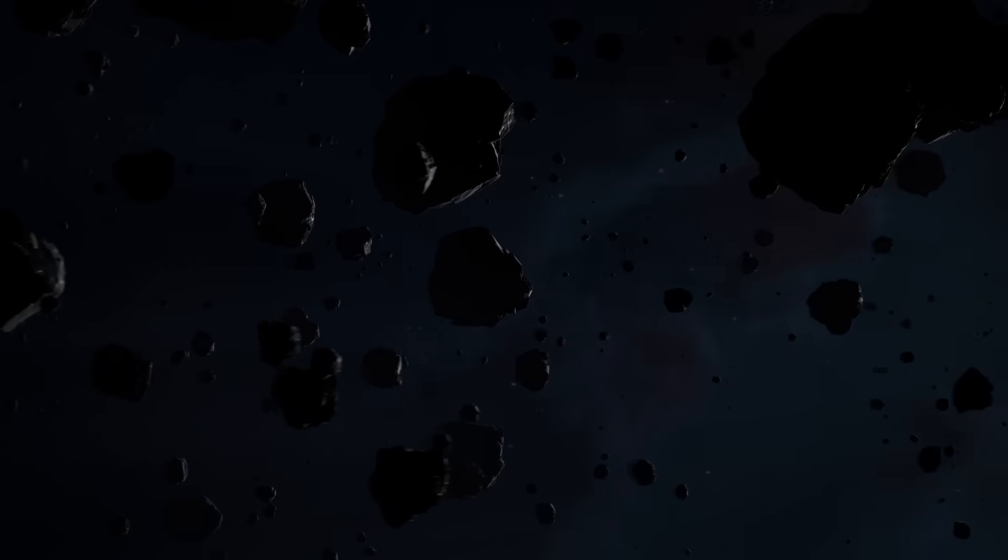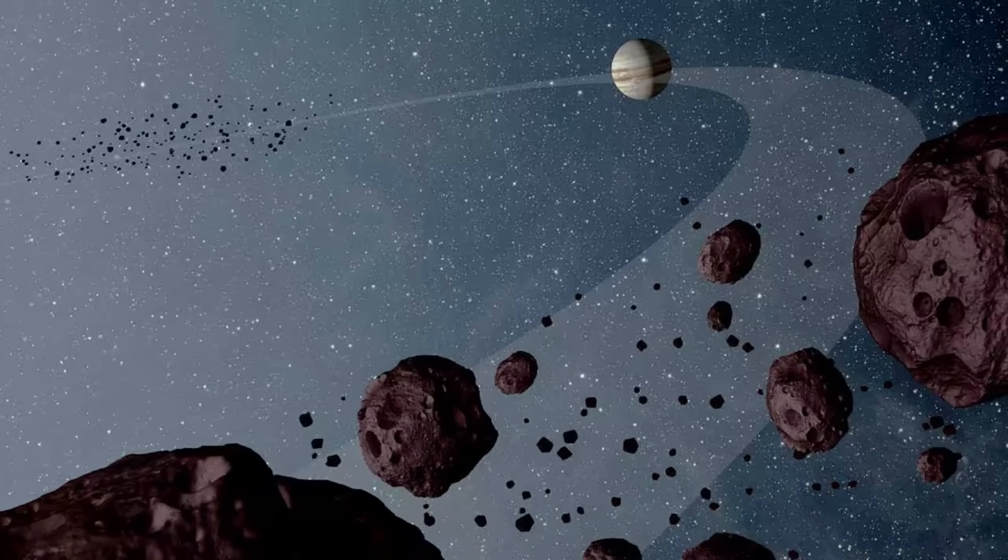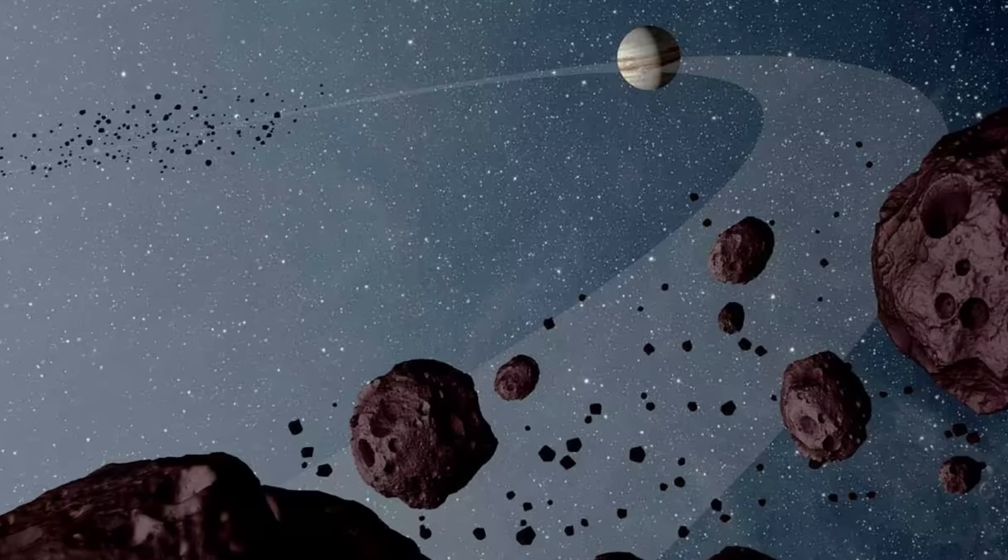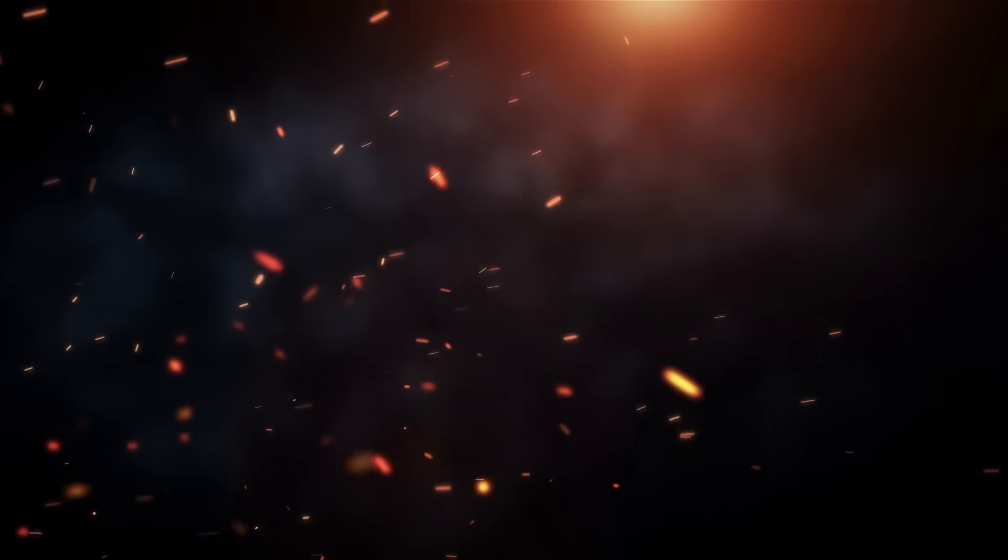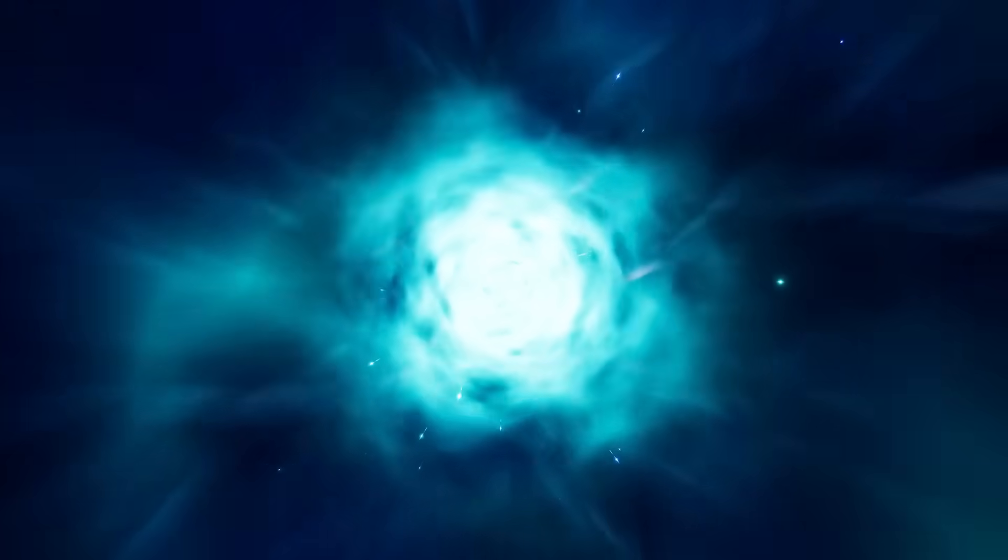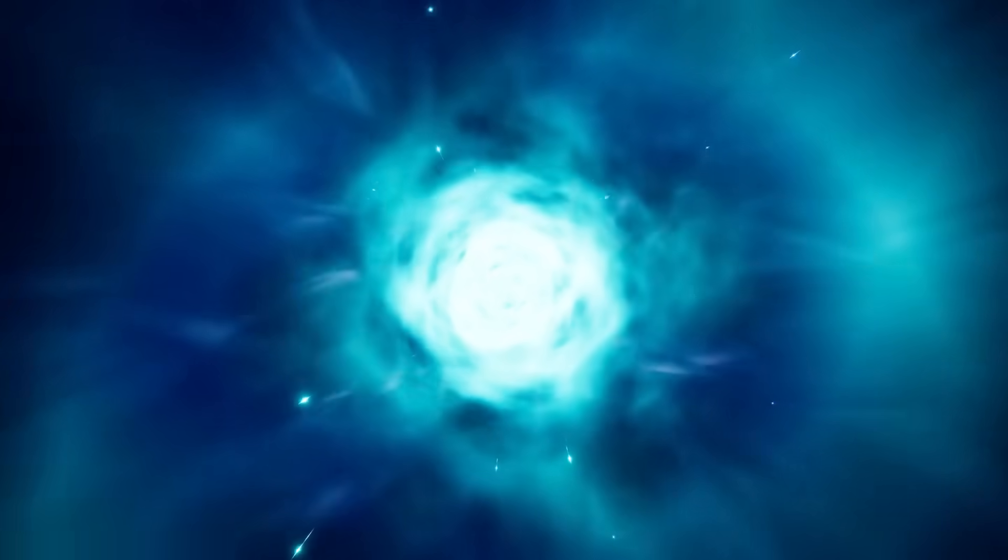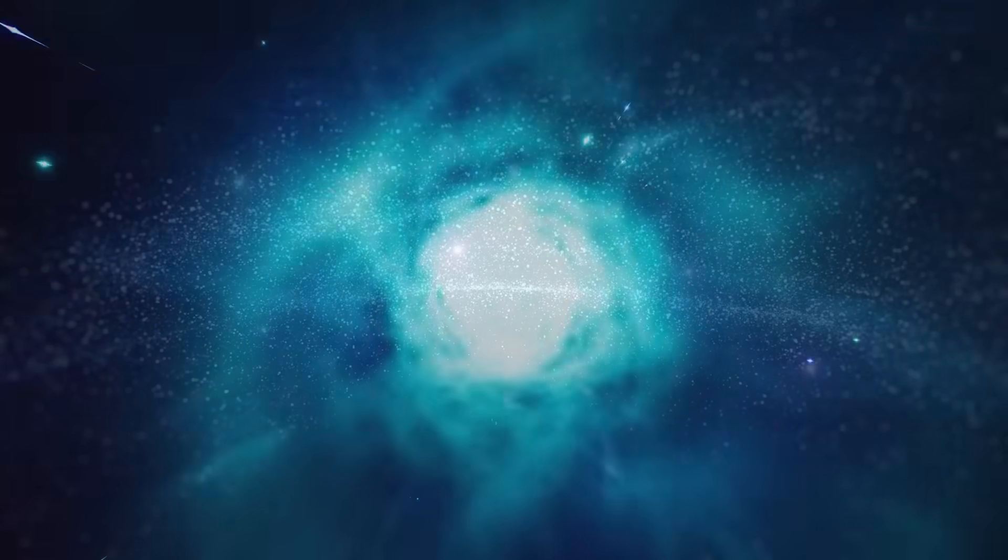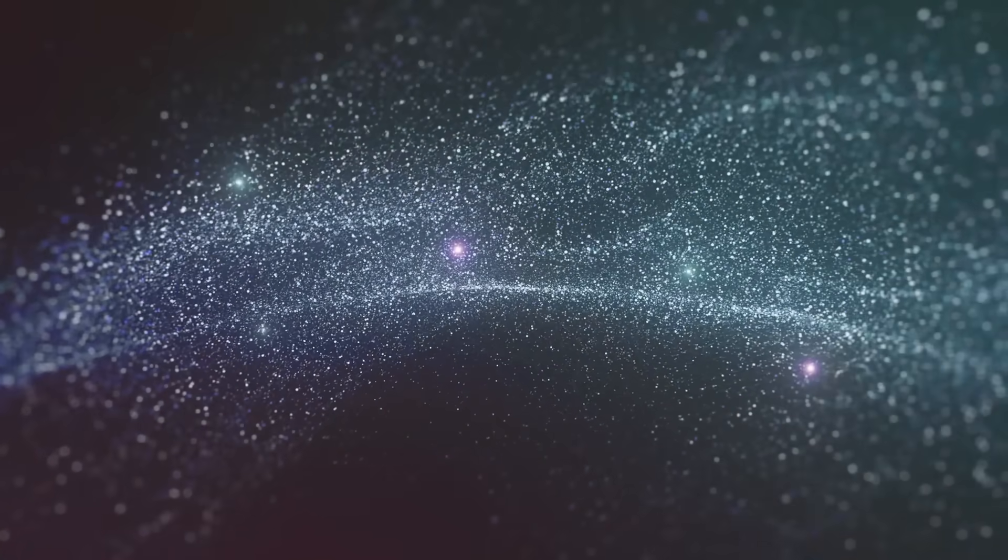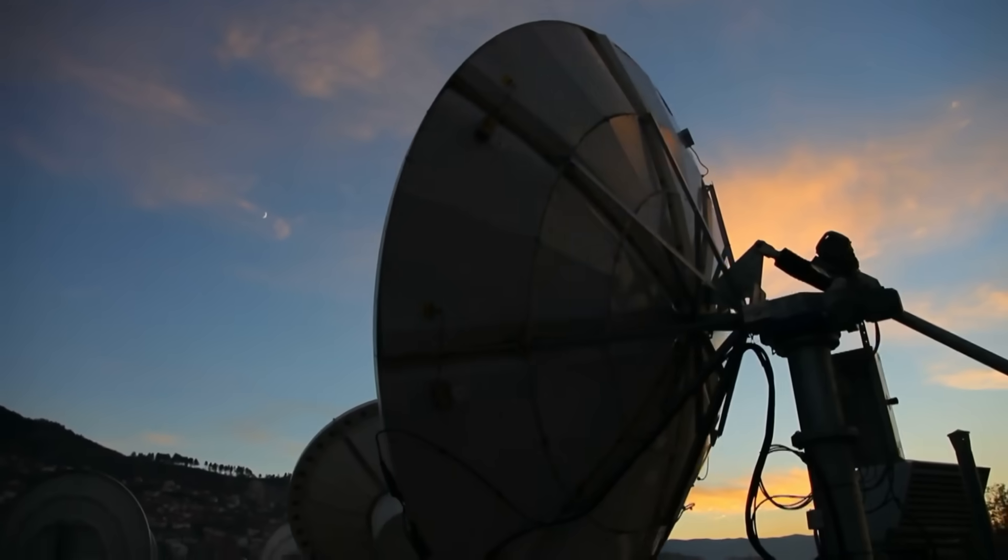Despite their invisibility, readings suggested that each of these objects radiates about 20 gigawatts of power. To grasp this, consider that a typical nuclear power plant generates about 1 gigawatt. Each companion is outputting 20 times that. Nine such bodies together give off energy greater than the combined electricity usage of many nations. Such output should be blindingly obvious. And yet, nothing is visible. How could something so powerful remain unseen?